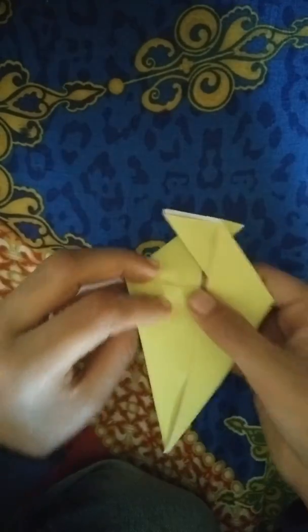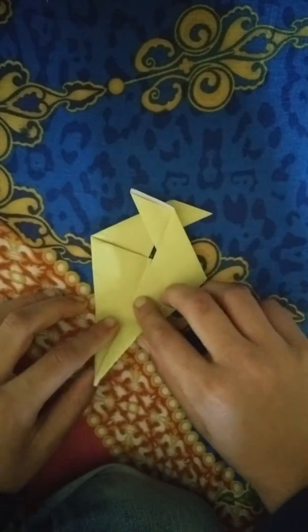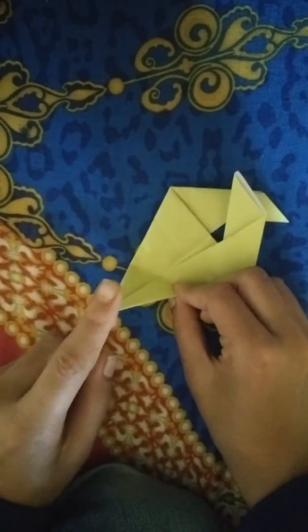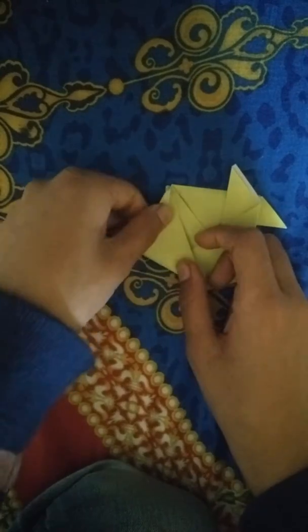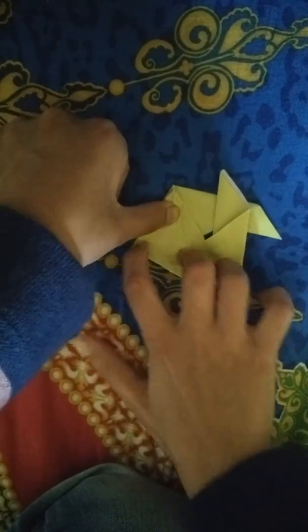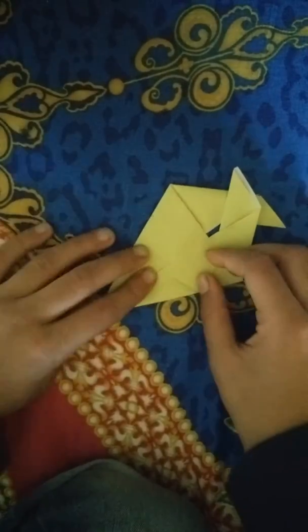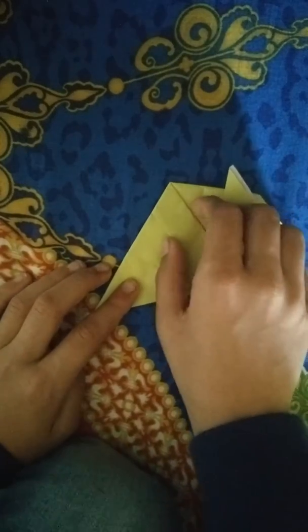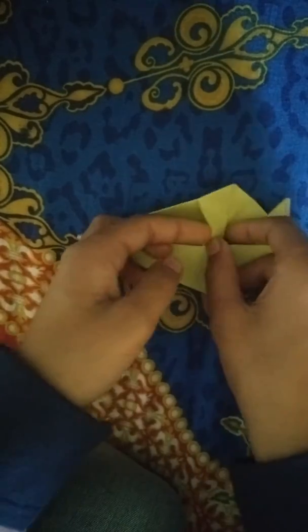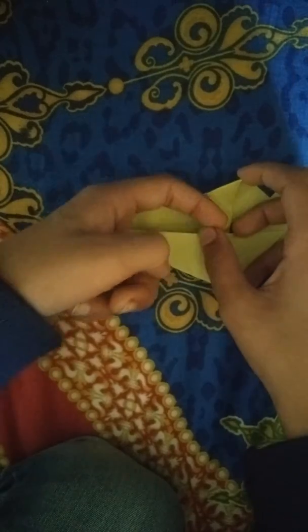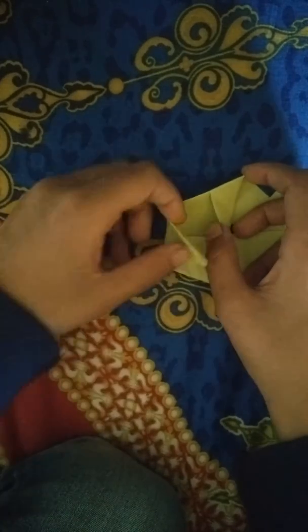Now turn it over and take this tip on this corner like this, and then open it. You can see your pocket over here. Put this flap inside it.